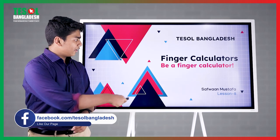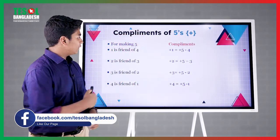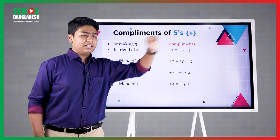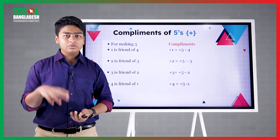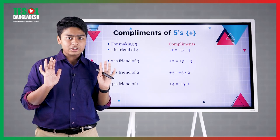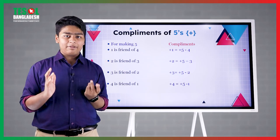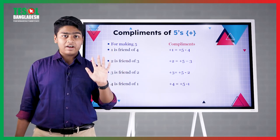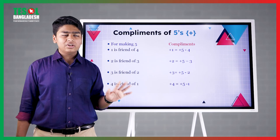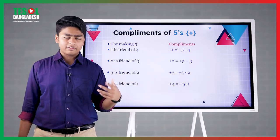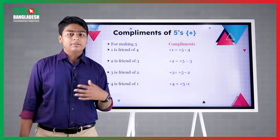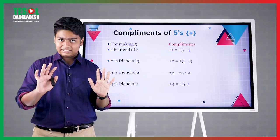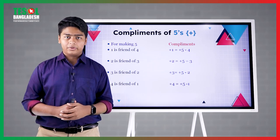So here, at first, we have complements of 5. There are 2 complements when we actually use abacus or fingers. That is, complements of 5s — you can even say combinations, both of them are right — and complements of 5s and 10s.